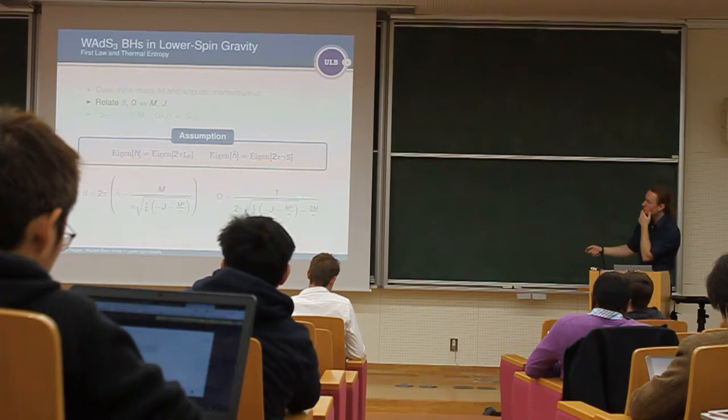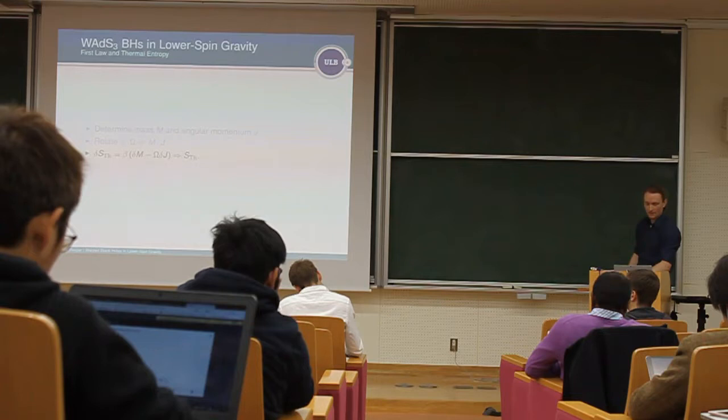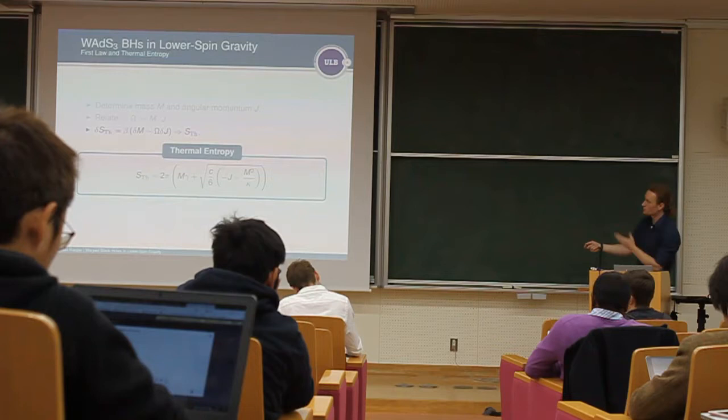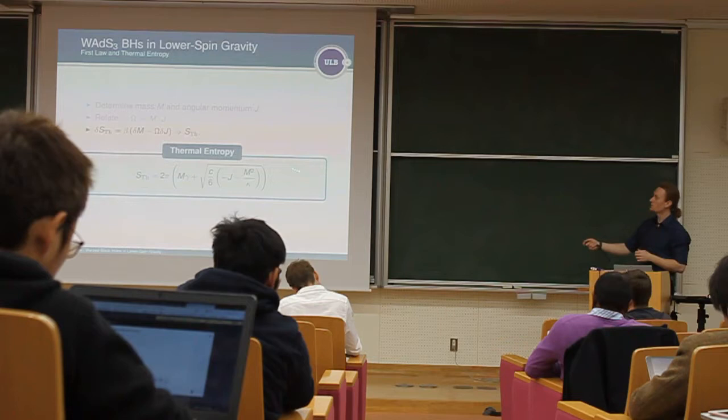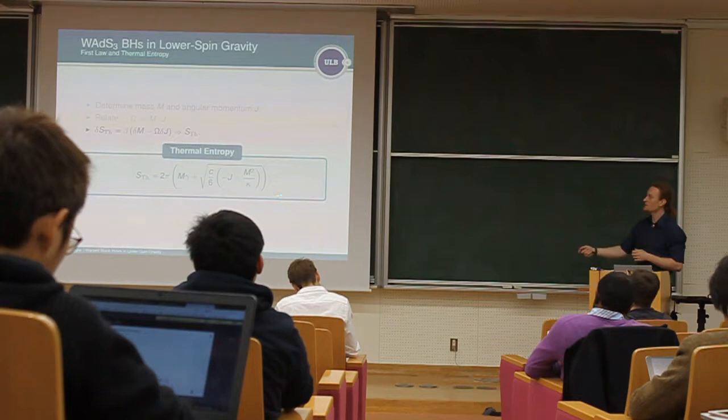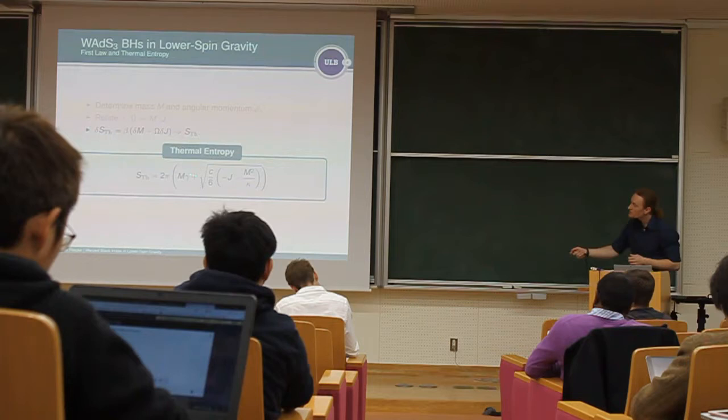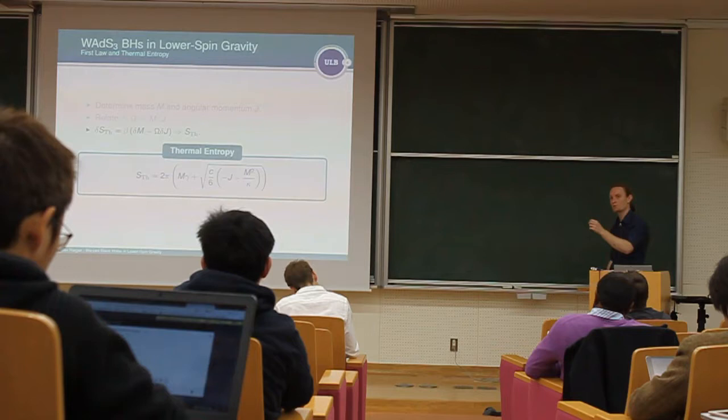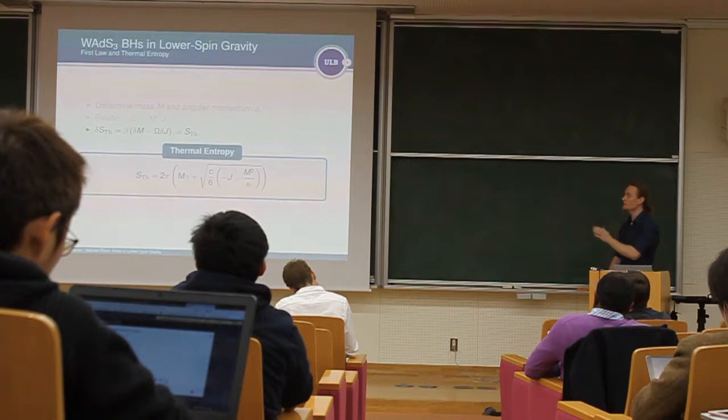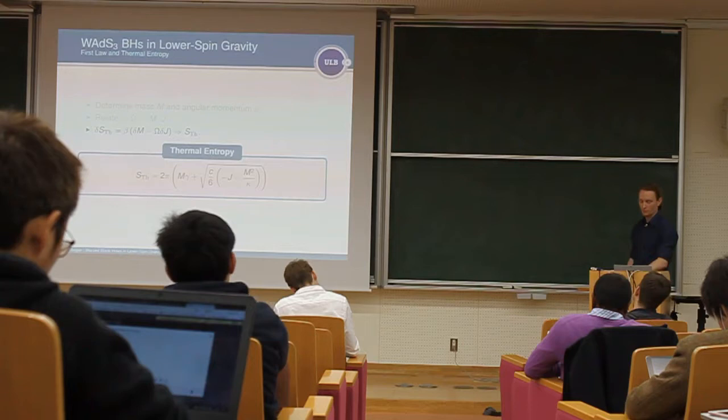Okay, using these assumptions, one is able to get very nice expressions both for the angular velocity and inverse temperature. And the last thing to do is basically to just integrate the first law. And doing so, one obtains, again, a very simple formula for the thermal entropy. And people familiar with 2D CFT will immediately see, okay, this is just the chiral half of the Cardy formula. And this guy is something that looks a little bit weird if you're not used to it. However, this whole expression is exactly what you would expect from a space like warped AdS black hole.